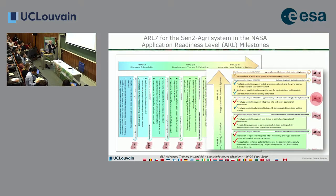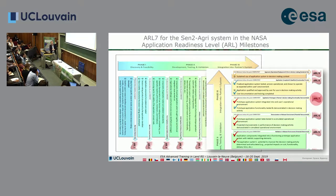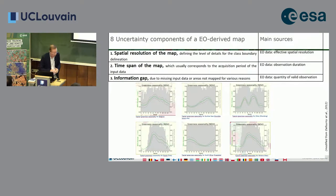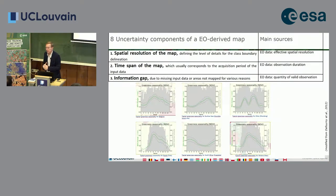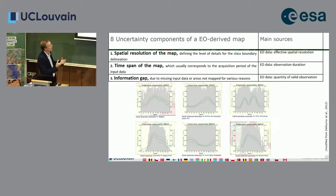These are related to the stage of validation according to CEOS. This is the application readiness level. Now I would like to come back to the more scientific part where we want to assess the different components of uncertainty before we look at the validation. We identify eight different components of uncertainty in any EO-derived product or map.